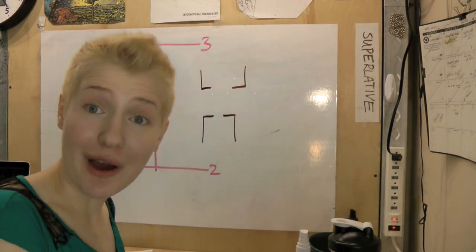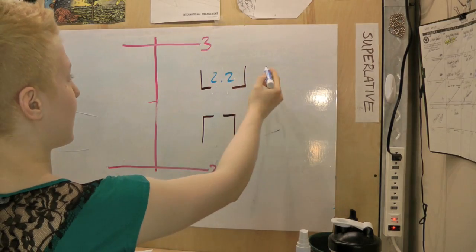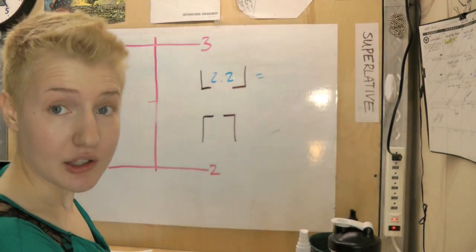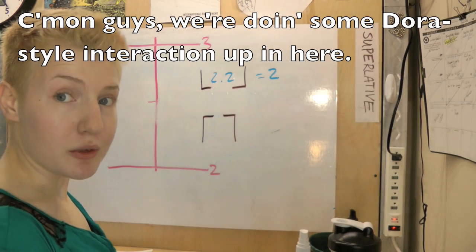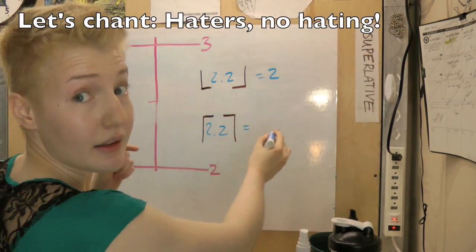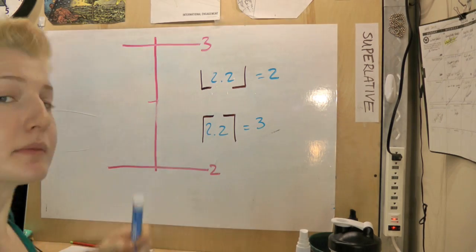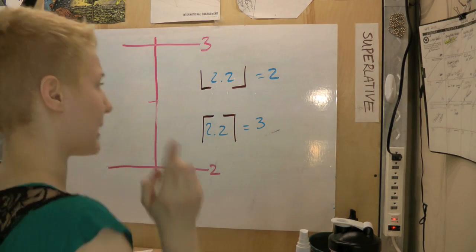So, let's do a few examples, shall we? What would the floor of 2.2 be? That's right, it'd be 2. What would the ceiling of 2.2 be? Right, 3. Alright, so it looks like you've got the hang of it. Let's do one more example.